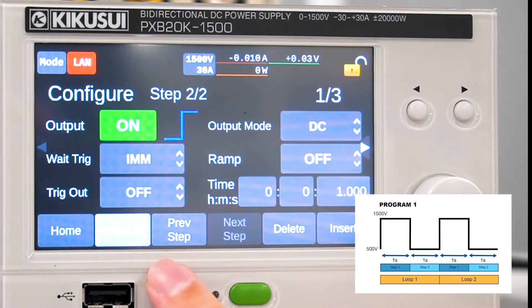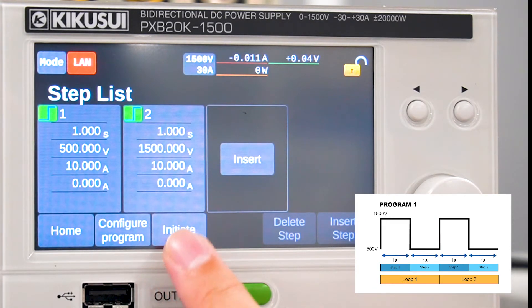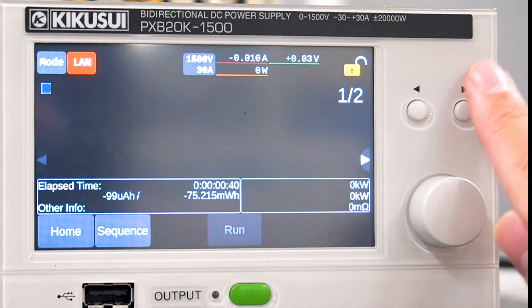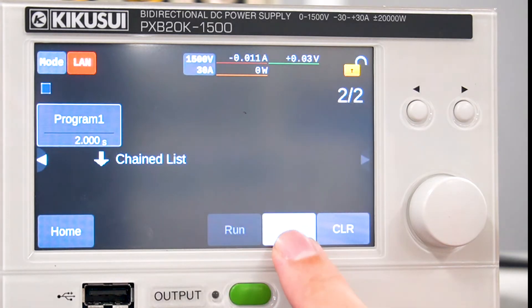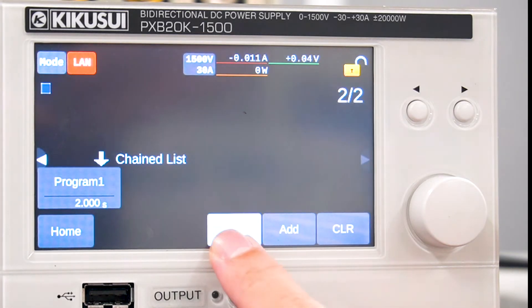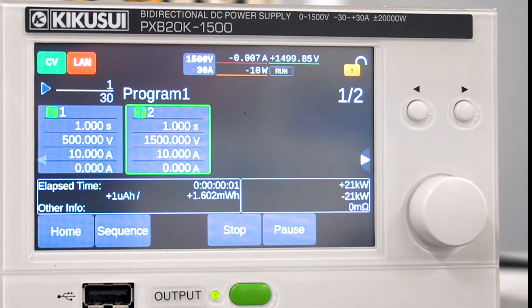Press step list to display the steps that have been set up so far. Press initiate and select program 1, which is a collection of the two steps we have created. Finally, press add and run to execute. The function is now running.